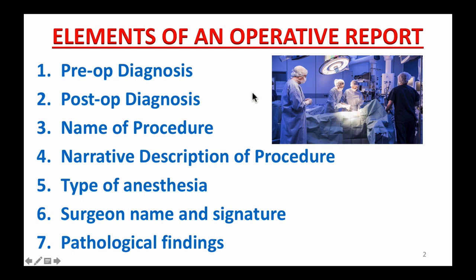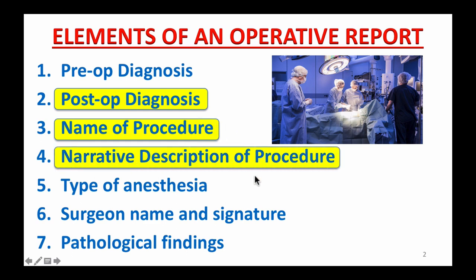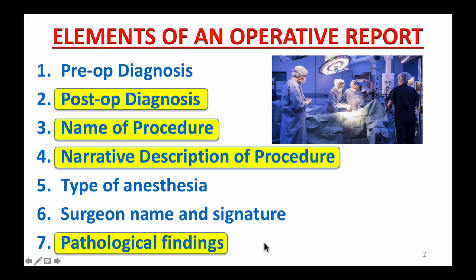For the purpose of my training objective, I want you to focus on: first, the post-op diagnosis — you need this for the ICD-10-CM primary code assignment. Next is the name of the procedure, which gives you an idea of what they are planning to do to treat the condition. Next is the narrative description of the procedure — this is the most important element simply because it will validate and support the procedure codes you assign. And equally important is pathological findings, which provides crucial information for diagnosis and procedure code assignment.